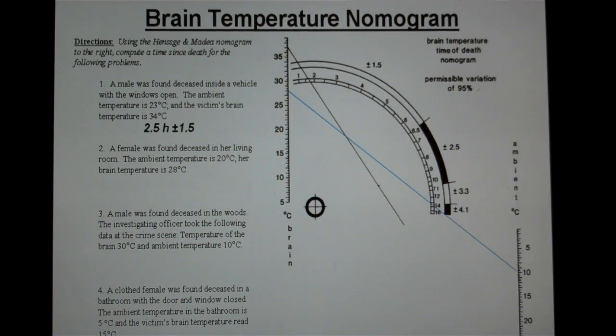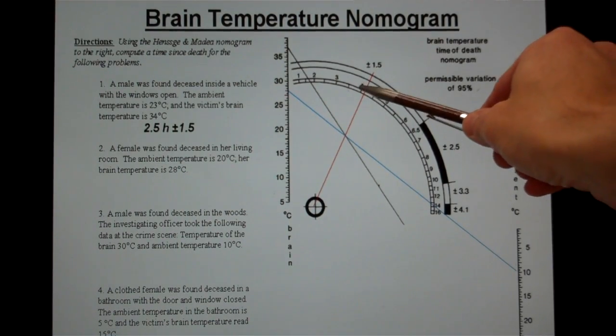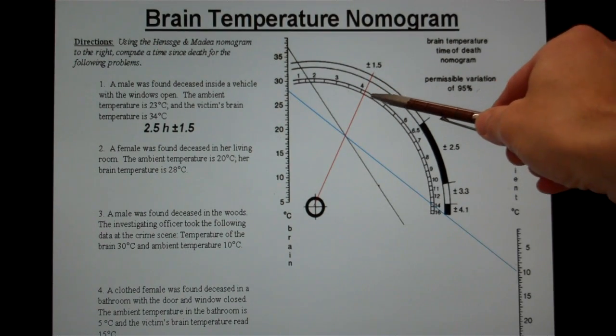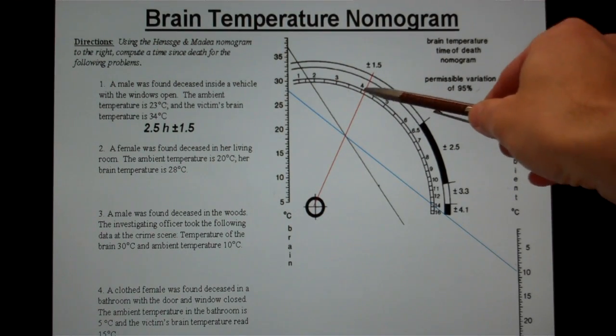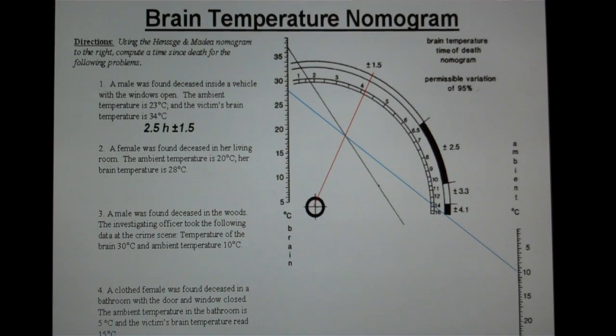Again, this will be a red line to illustrate the line I just discussed. Now I can compute time of death. In this example, it looks as though the individual's been dead just over four hours, knowing that that's four, four and a half, and five. I can make the approximation that this person's been dead 4.2 hours plus or minus 1.5 hours.